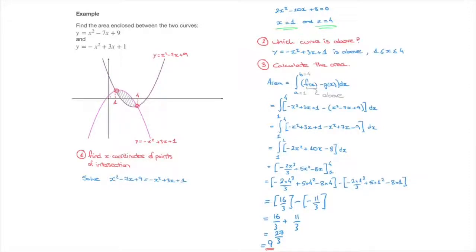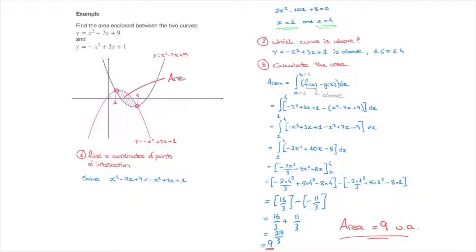Let me write the answer clearly: area equals 9, or 9 units of area. We can also illustrate this result by labeling the shaded grey area on our graph as 9 units of area. And that's how we calculate the area enclosed by two curves. That's it for this tutorial.